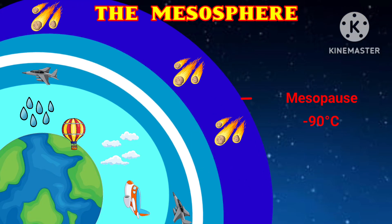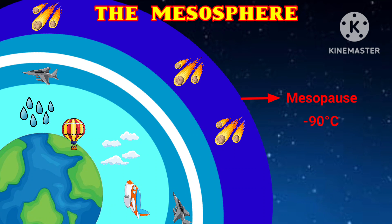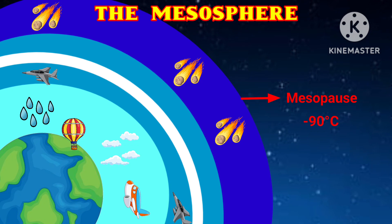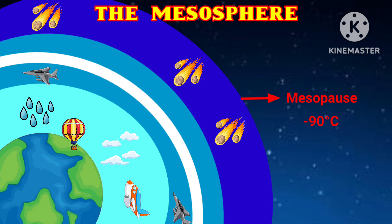The region above the stratosphere is called the mesosphere. Here, temperature again decreases with height, reaching a minimum of about minus 90 degrees Celsius at the mesopause.